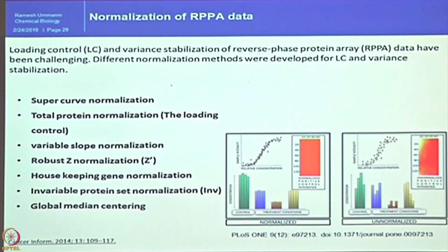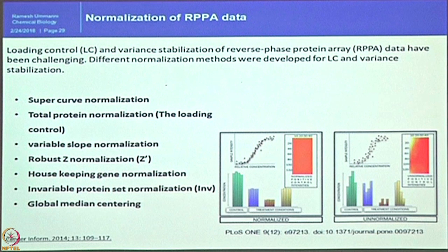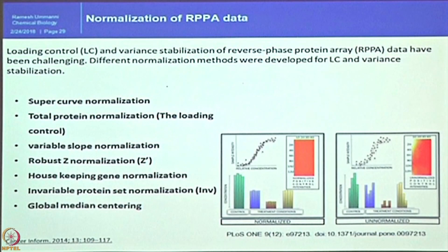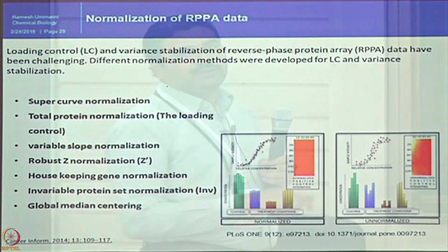Particularly in RPPA data, normalization is very very difficult because when you do the protein estimation and extraction, all these steps cannot be replicated for 1000 samples in the same manner. If you do 10 samples you will have 10 different values in terms of protein concentration and method followed. To avoid that, different normalization methods have been developed: super curve normalization, total protein normalization, variable slope normalization, and robust Z score normalization. One method followed in Western blot is housekeeping normalization — we all favor doing GAPDH — and invariable protein set normalization.